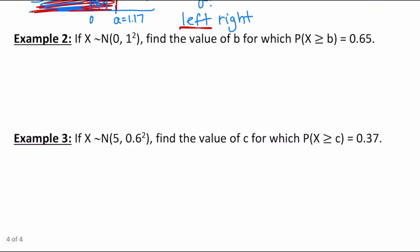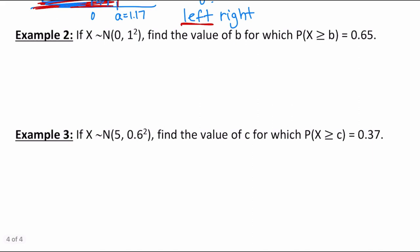Example number two: still dealing with the standard normal distribution where the mean is 0 and the standard deviation is 1. Find the value of b for which the probability of x greater than or equal to b is equal to 0.65. Now we're shading to the right, and that area is more than half, so let me draw my diagram.